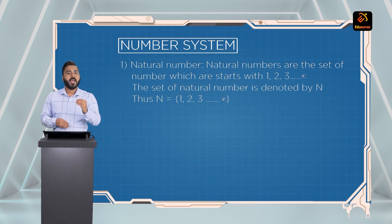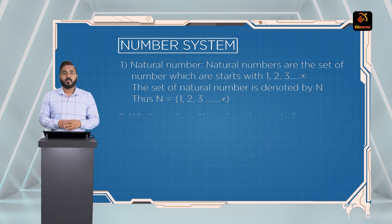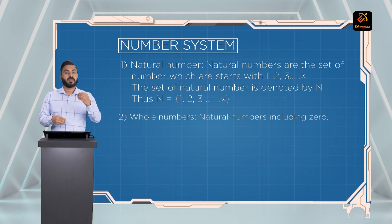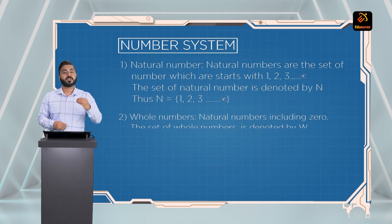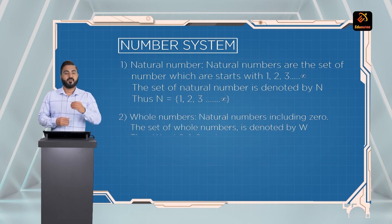So N is equal to {1, 2, 3, 4, 5, ...} up to infinity. The next type is whole numbers. Whole numbers are the natural numbers which include 0. So the numbers starting with 0 up to infinity are called whole numbers. We denote whole numbers with W.